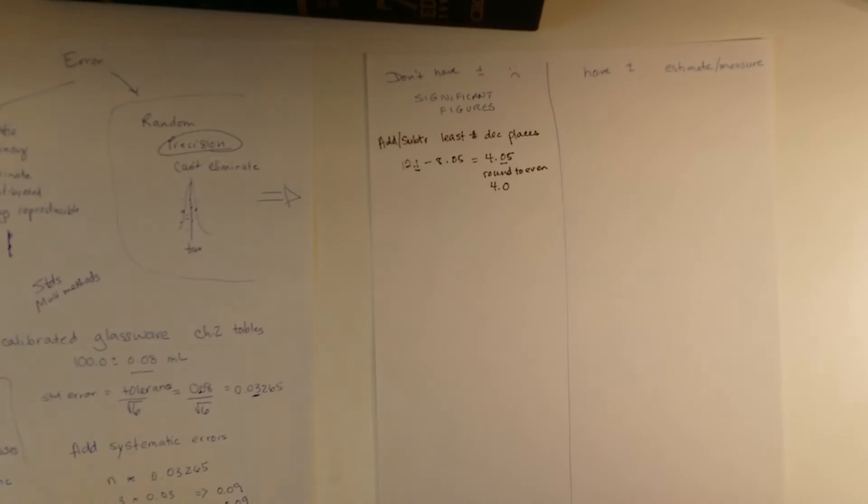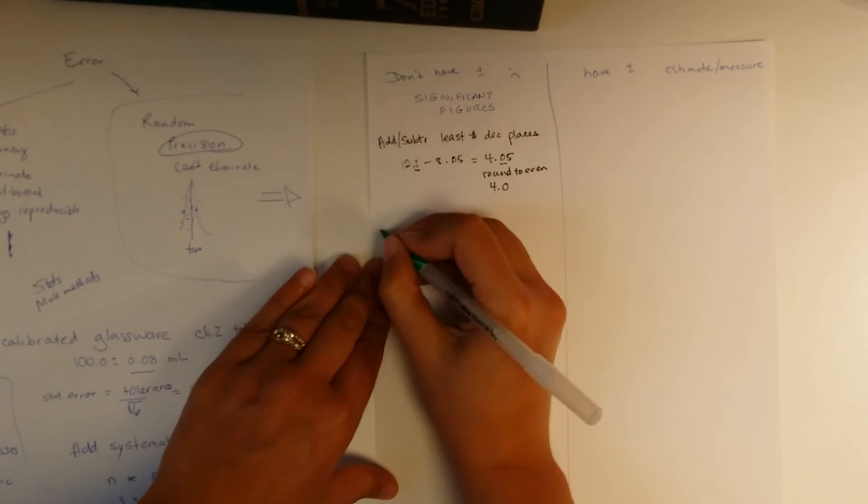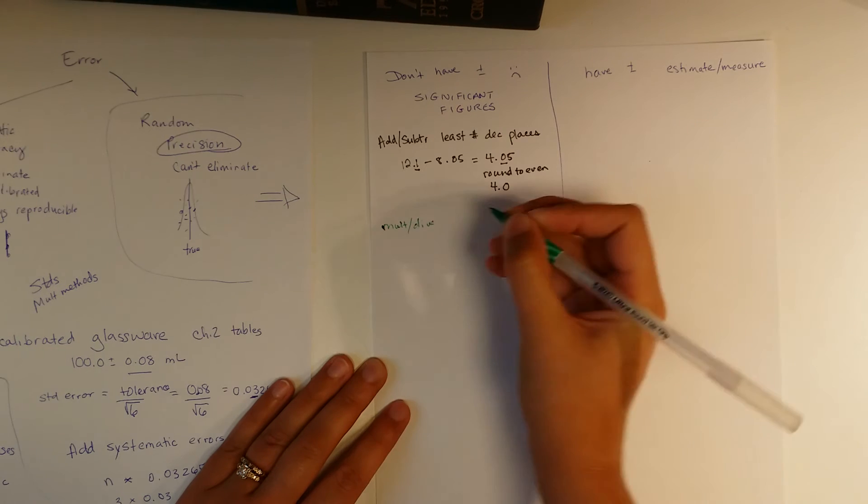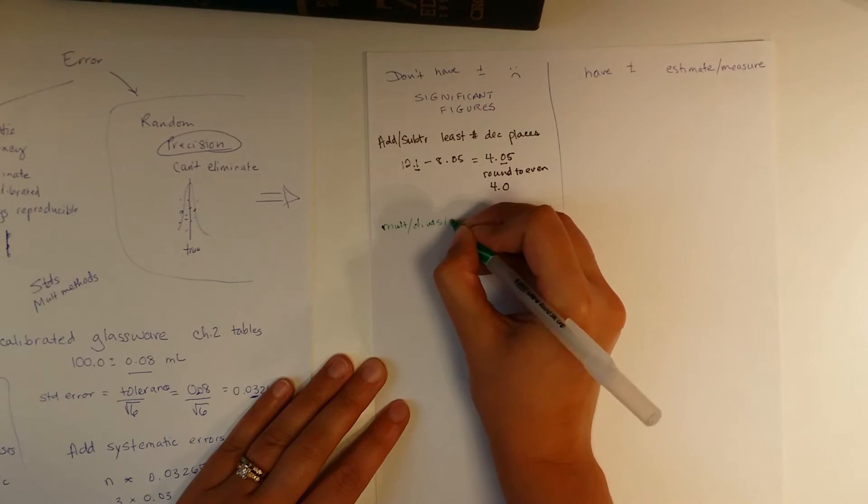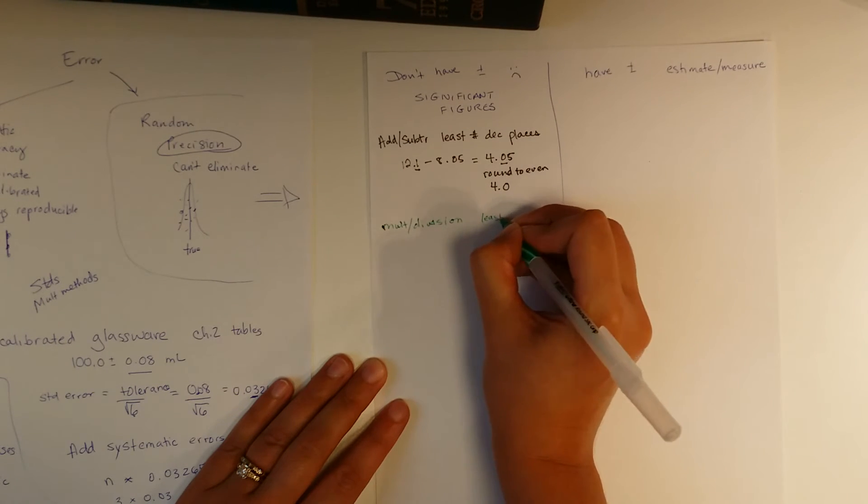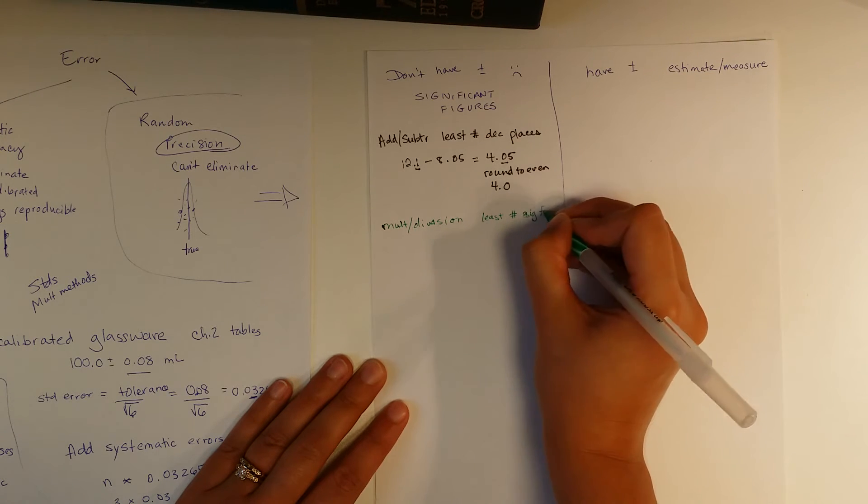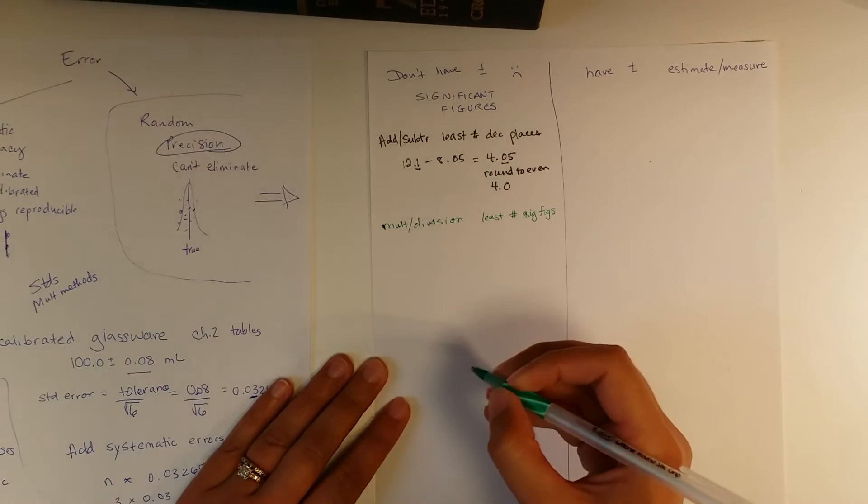Now, color coding continues. Multiplication and division. For multiplication and division, it's the least number of sig figs, which means you have to be able to count sig figs. Okay, so here's a nice example.